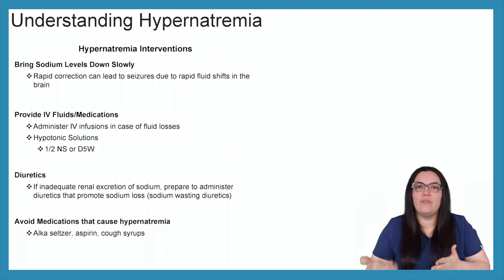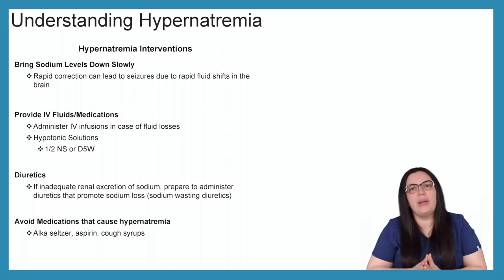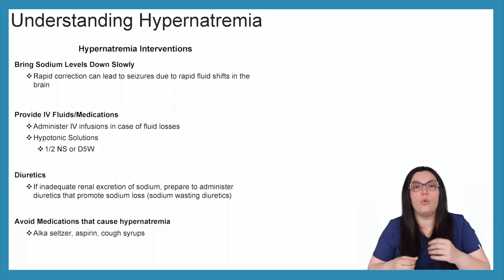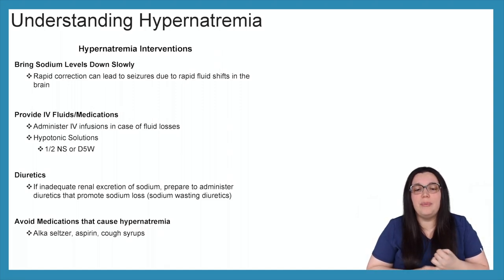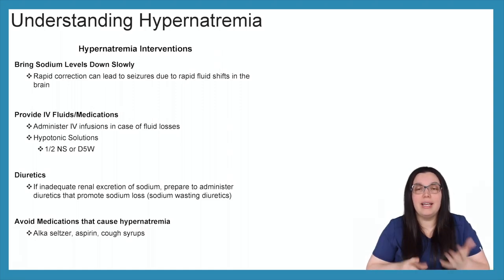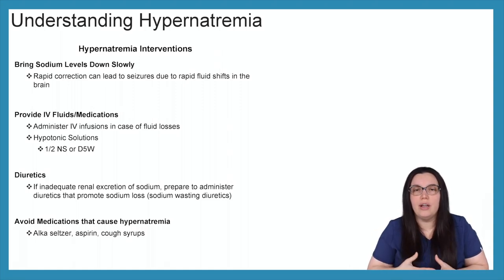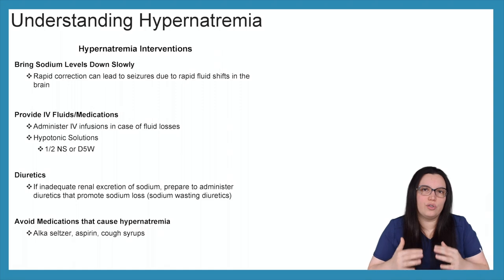Let's talk about interventions for our hypernatremia patient. Our number one goal is to bring the sodium levels down, but we need to do that very, very slowly. Why? Because where sodium goes, water goes — so rapid correction of high serum sodium levels will cause rapid fluid shifts, increasing the risk of seizures and neurological damage. We definitely want to correct these high serum sodium levels at a much slower pace.